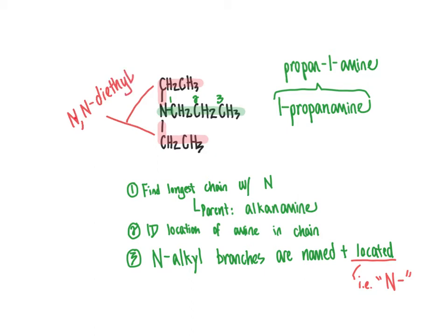The N designates that the alkyl group is directly bonded to the nitrogen. By saying N,N-diethyl, that means both ethyl groups are directly bonded to that same nitrogen. Piecing this together, the full name for this molecule is N,N-diethyl-1-propanamine, or alternatively N,N-diethylpropan-1-amine, since 1-propanamine and propan-1-amine are synonyms of one another.